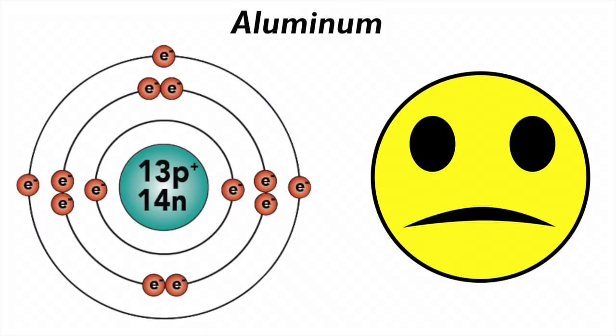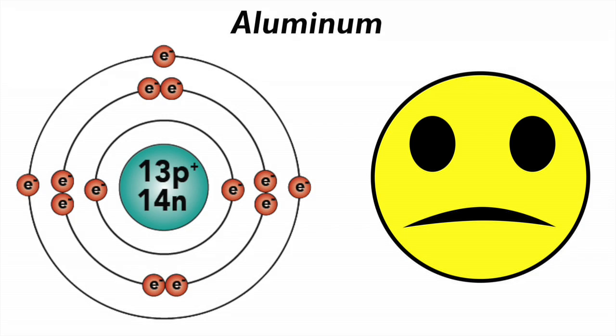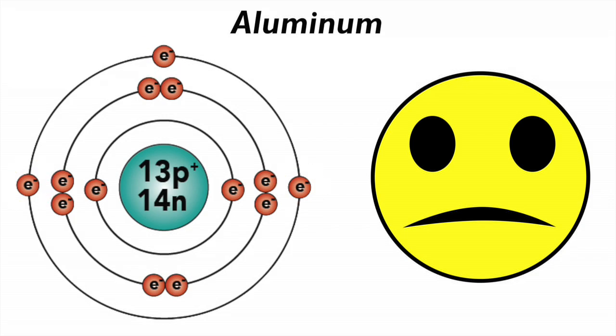Rule number two is this: if atoms are unhappy because their outer orbitals are incomplete, then what they'll do is they'll trade or share electrons with other atoms in such a way so that their orbitals do become complete. For example, aluminum has three electrons in its outer orbital, making it an unhappy atom. What aluminum will do is give those three electrons away to another atom, and that'll make aluminum happy.